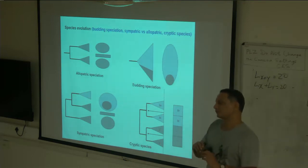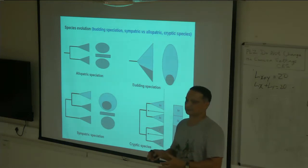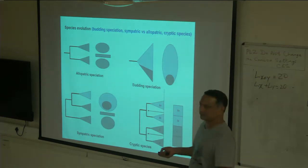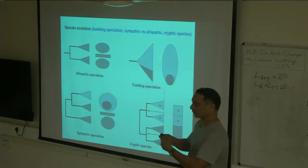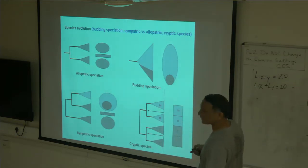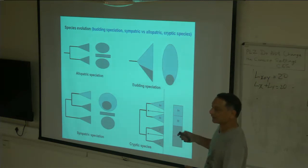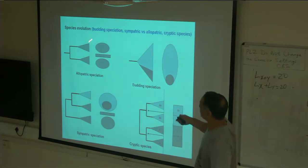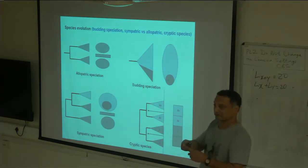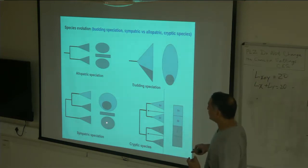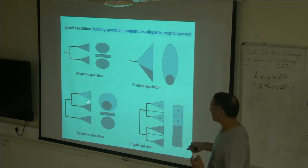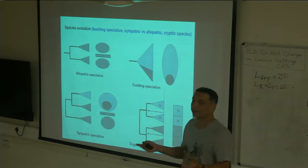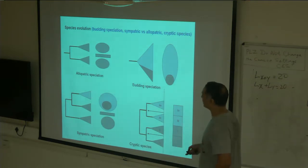Phylogenies are central to understanding speciation. When we want to understand speciation, we look at sister species, and you need a phylogeny to establish that. You can then ask: is it allopatric speciation or sympatric speciation? Allopatric speciation occurs when subpopulations get isolated by a barrier and their ranges don't overlap. If species have non-overlapping ranges and are sister, one can say it's possibly allopatric speciation. Whereas if the ranges overlap and they are sister, this could be sympatric speciation — though you also have to look into ecological data.